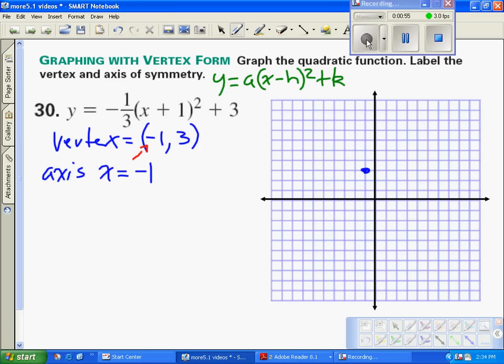We're going to plot the axis of symmetry right there at negative 1 and label it, please: x equals negative 1.